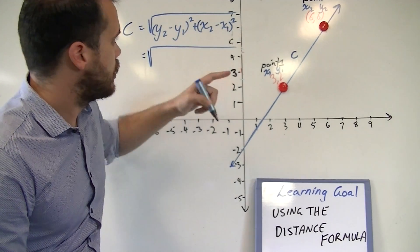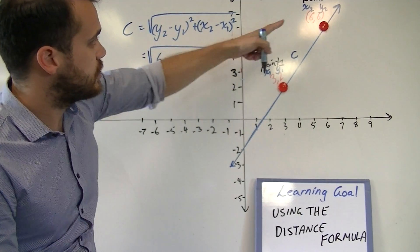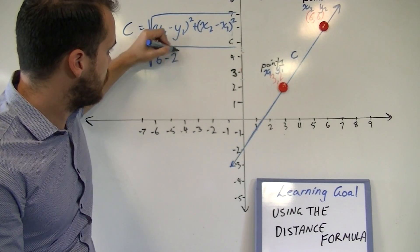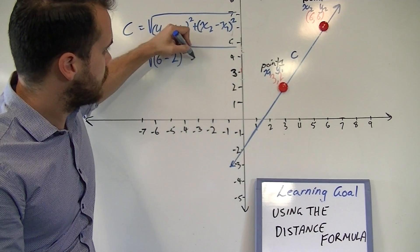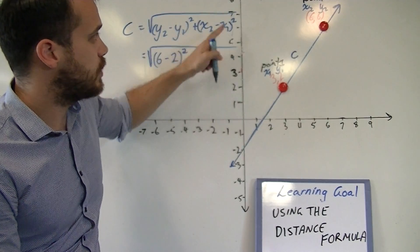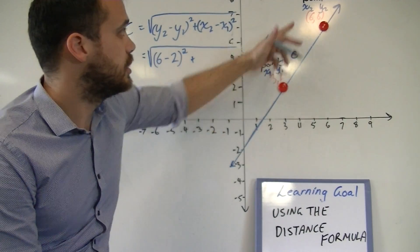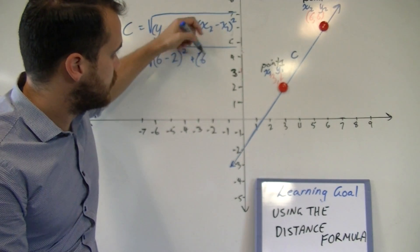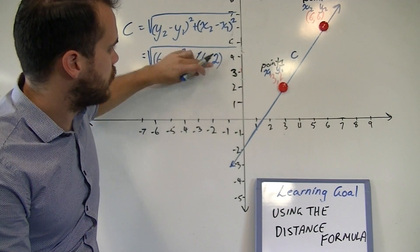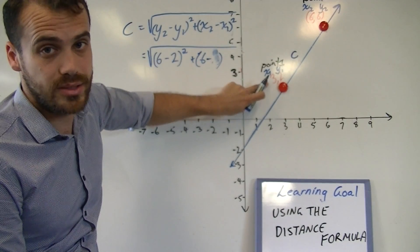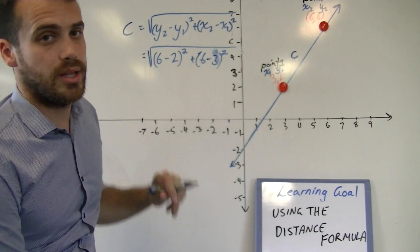Square root of y2, which is six, minus y1, which is two. Now, all of that's in brackets and you're squaring it, plus x2 minus x1. x2 is six, x1 is... sorry, x1 is three. That's why we labelled it. And we square that.